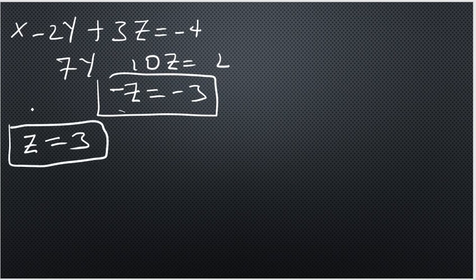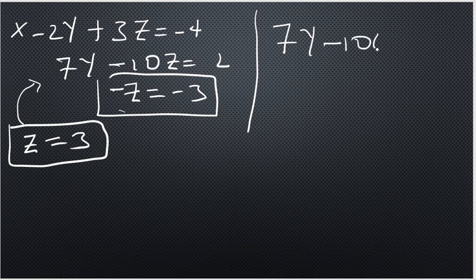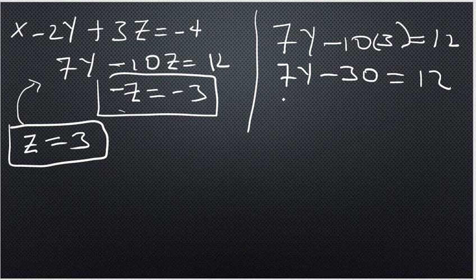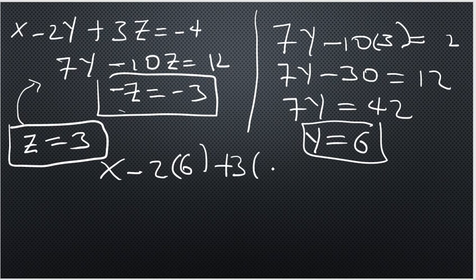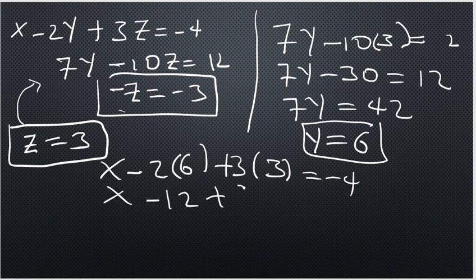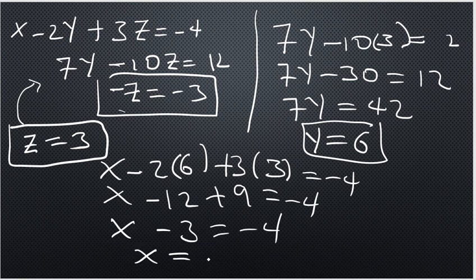Substituting z = 3 into the second equation: 7y - 10(3) = 12, so 7y - 30 = 12, giving 7y = 42, and y = 6. Then substituting y = 6 and z = 3 into the first equation: x - 2(6) + 3(3) = -4, so x - 12 + 9 = -4, meaning x - 3 = -4, and therefore x = -1.